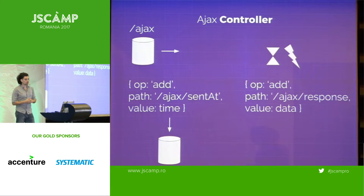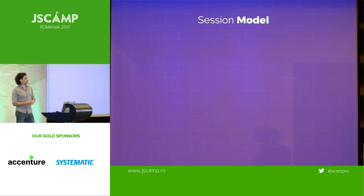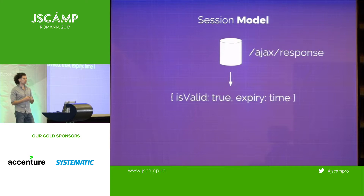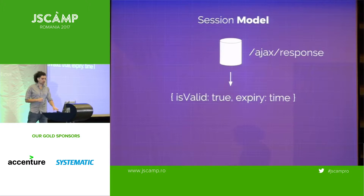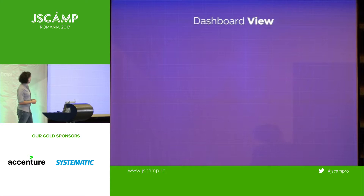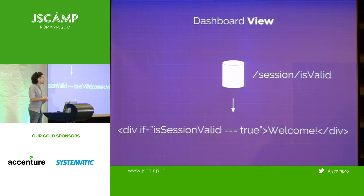After a certain period of time, a response comes. It takes that response, forms another patch, and puts it to the data store. A session model then transforms the state on the data store and verifies if the session is valid or not. If the response is valid, it sets valid to true and sets the expiry time according to the response time and session expiry parameters, then sets that again on the state. The end of the example happens in the dashboard view — the component that needs to render the dashboard listens to whether the session is valid, and if so, shows the user the welcome screen.